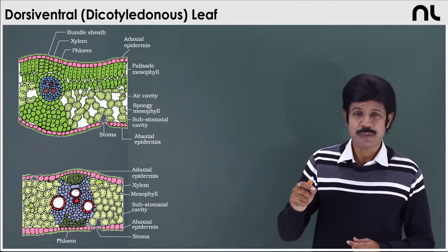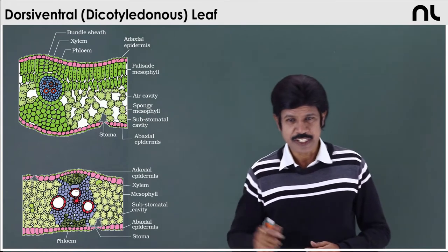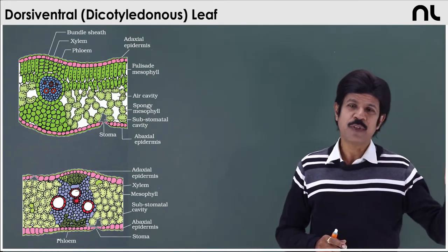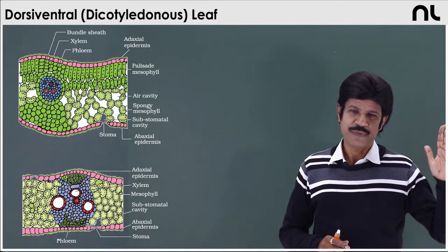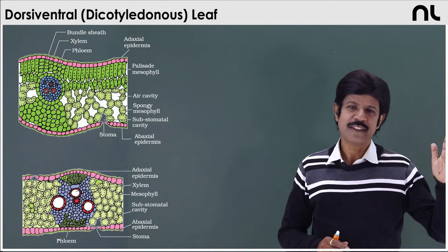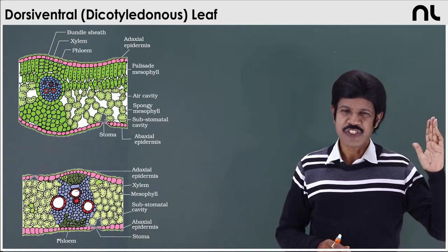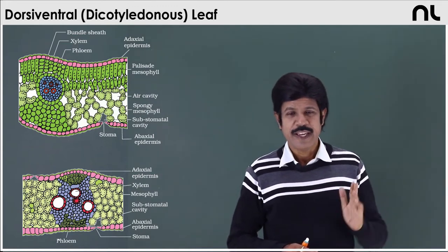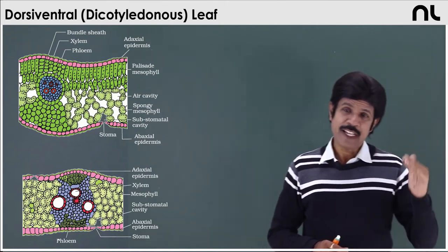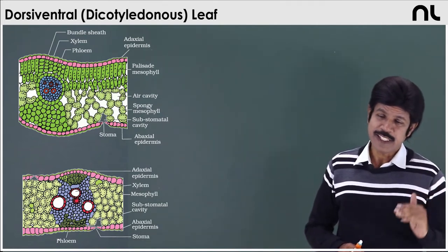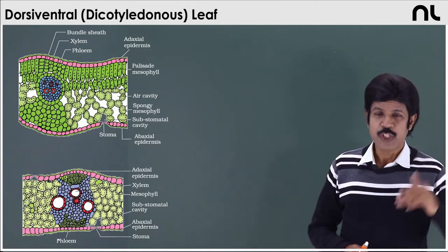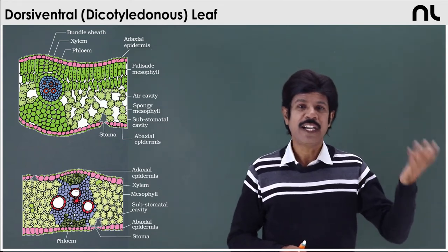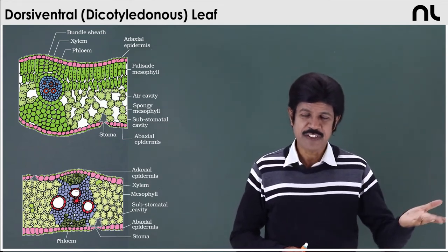A differentiated leaf is what we call it. In contrast to this, the monocot leaf is not differentiated — it is an undifferentiated leaf. Externally as well as internally it is undifferentiated. It is called a unifacial leaf, the monocot leaf, an undifferentiated leaf.